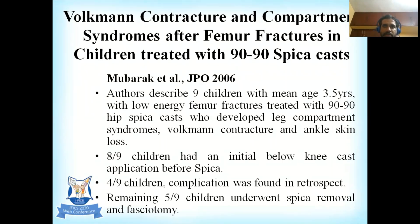The authors described nine children with a mean age of 3.5 years with low-energy femur fractures treated with 90-90 hip spica casts, who developed leg compartment syndromes, Volkmann contracture, and ankle skin loss. Among the nine children, eight had an initial below-knee cast application before the final spica application.